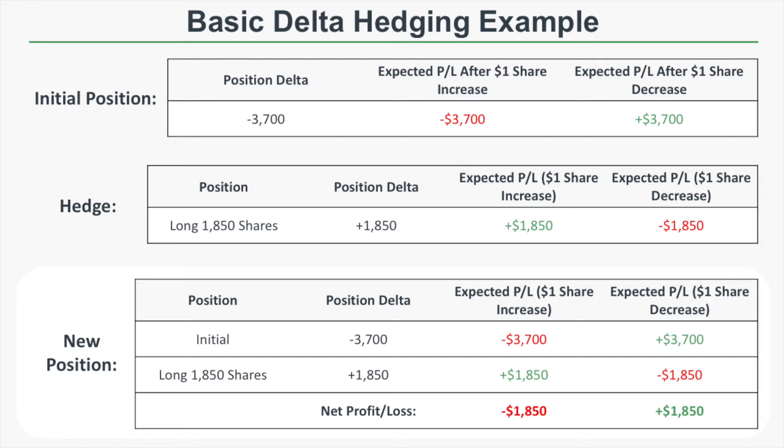So by Delta hedging the initial position by 50%, the expected profit or loss in either direction is 50% of what you'd expect without the hedge. Before hedging, a $1 stock increase meant an expected loss of $3,700, and a $1 fall meant a gain of $3,700. By cutting the position Delta in half with a long stock hedge, the new expected P&L is negative $1,850 for a $1 share increase and plus $1,850 for a $1 share decrease.